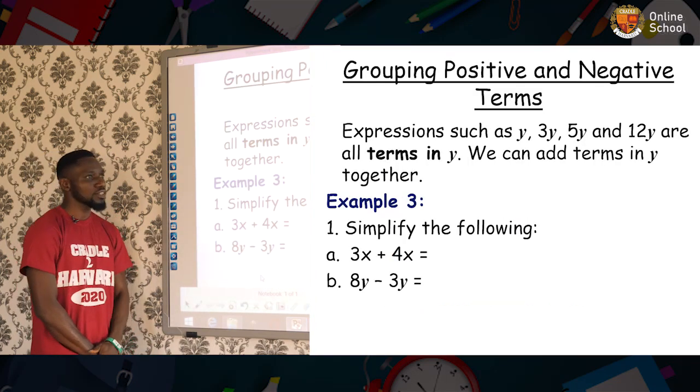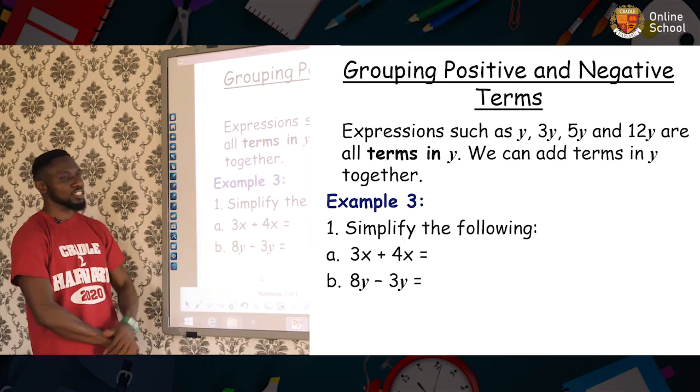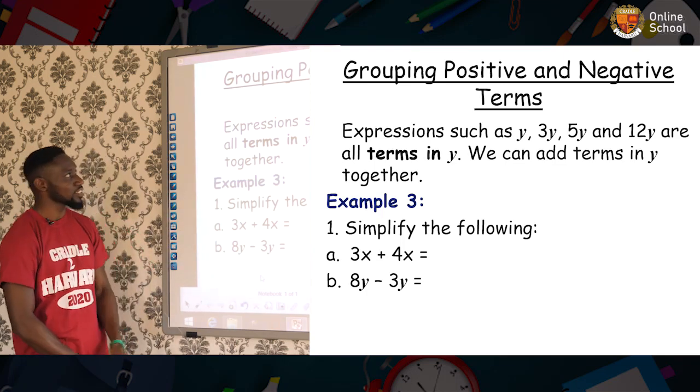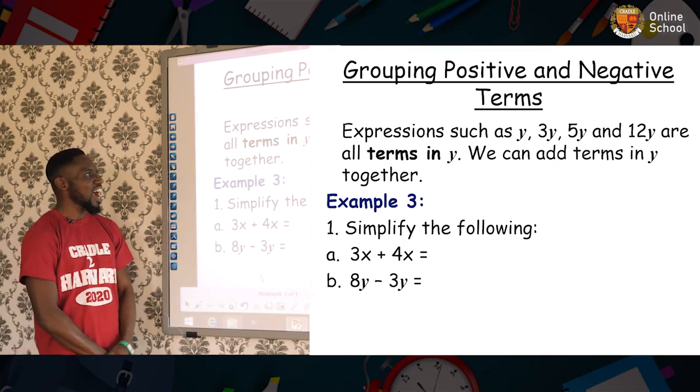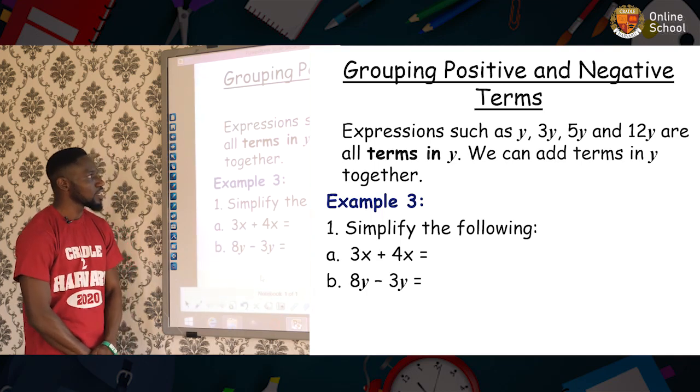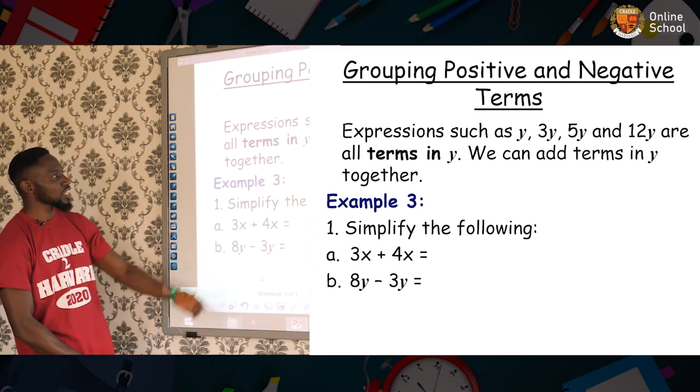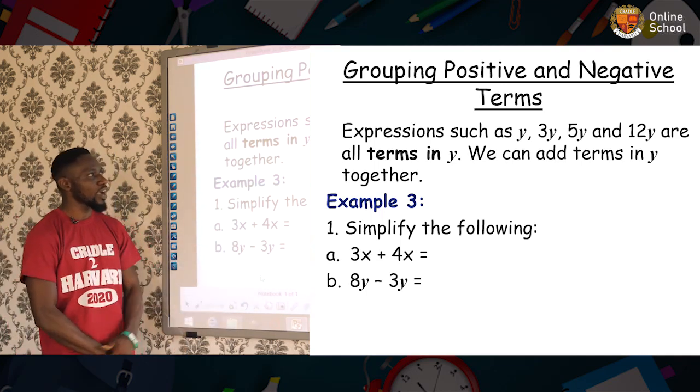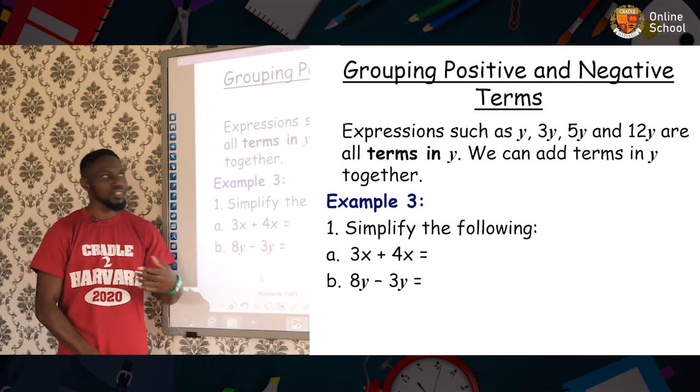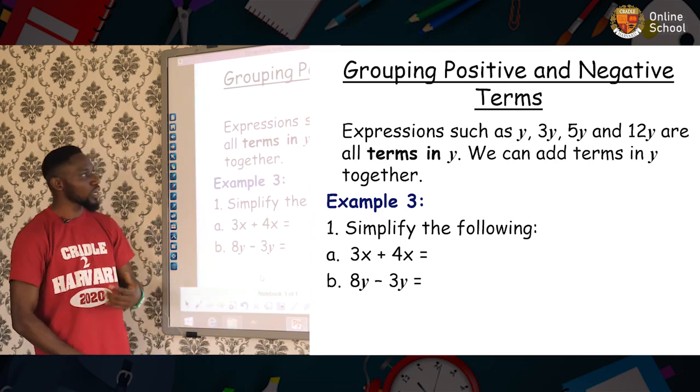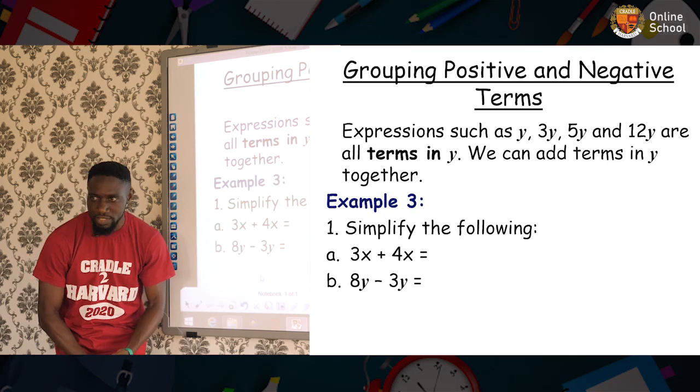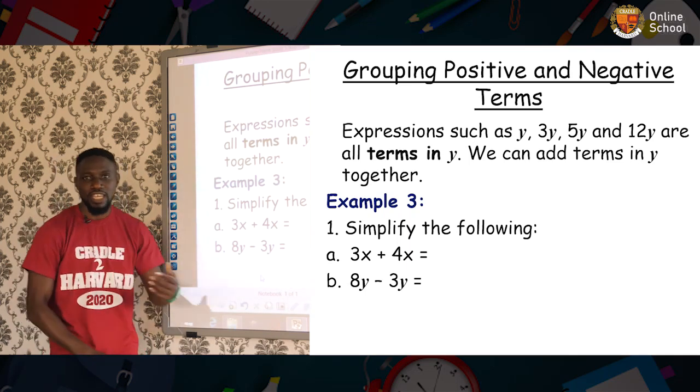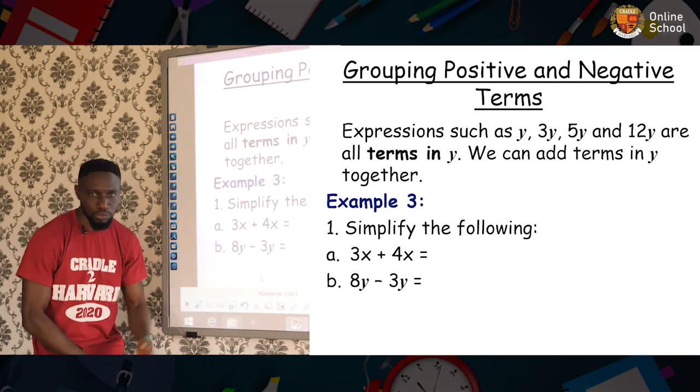Now, let's look at this. The second objective I say we should be able to achieve at the end of this class is to be able to group positive and negative terms. Now, the expressions such as y, 3y, 5y, and 12y are all terms in y. We call them like terms. And such terms can be added together or subtracted together.